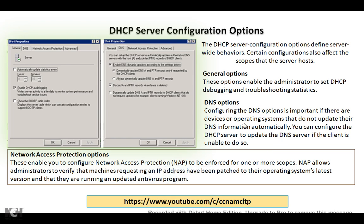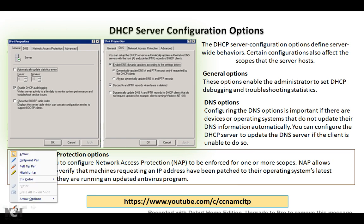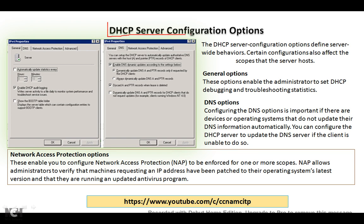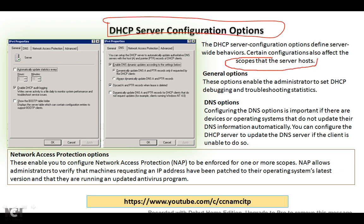Hi guys, welcome. In this video we are going to learn about DHCP server configuration options — what are the server configuration options we have in DHCP. The DHCP server configuration option defines server-wide behaviors. Certain configurations also affect the scope that the server hosts. We will see some configurations in which we will enhance the scope of our server and enhance some features. Let's look at this image to see what options are available.